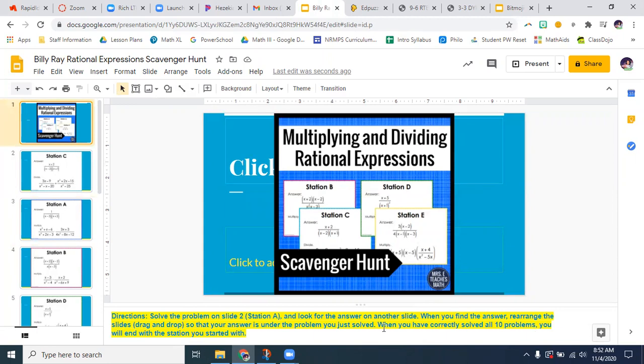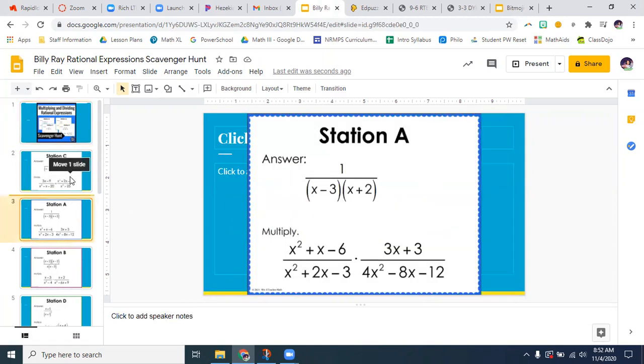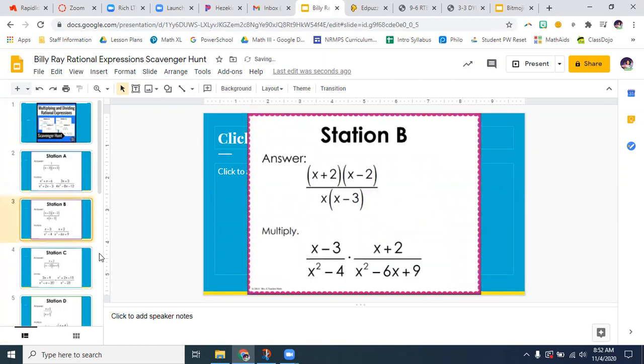When you have correctly solved all 10 problems, you will end with the station you started with. So this only works if you solve all 10 of them correctly. So if you make one mistake, you're not going to be able to get back to the problem that you started with. Let me put these back in order. Well, this is my copy. So it doesn't matter. You're going to make your own copy.